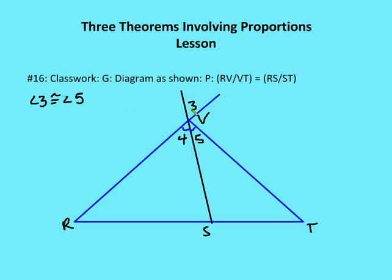For classwork: given angle 3 is congruent to angle 5, we need to prove that RV is to VT as RS is to ST. This looks like the Angle Bisector Theorem. Vertical angles are congruent, so angle 3 is congruent to angle 4. Since angle 3 is congruent to angle 5, angle 4 is congruent to angle 5, meaning ray VS bisects angle RVT. By the Angle Bisector Theorem, RV is to VT as RS is to ST. That's it for the lesson — join us for the next set of practice problems on three theorems involving proportions.